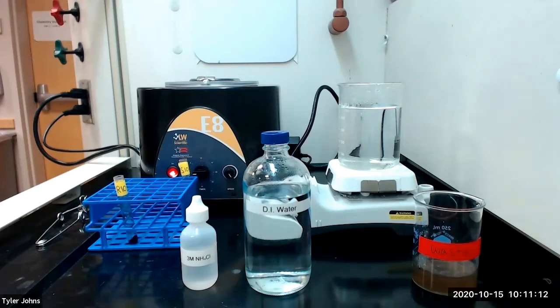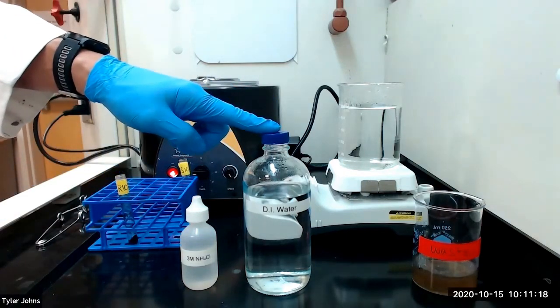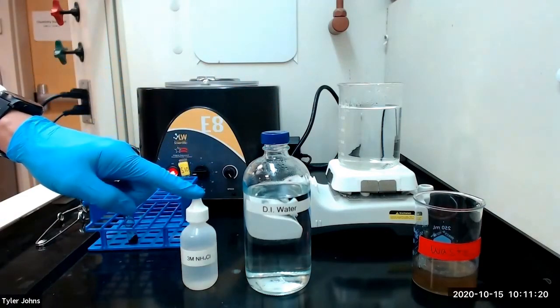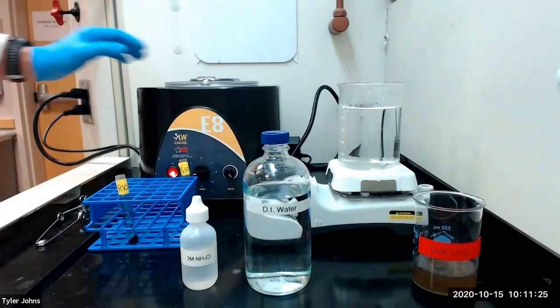We will now perform the test for zinc ion. To begin, we will wash residue R10 with 5 milliliters of deionized water and two drops of 3 molar ammonium chloride. We will then mix, centrifuge, and discard the wash.